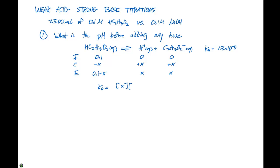Times the concentration of C2H3O2 minus, which is also x, divided by the concentration of the acetic acid, which is 0.1 minus x. This equals 1.8 times 10 to the minus 5.